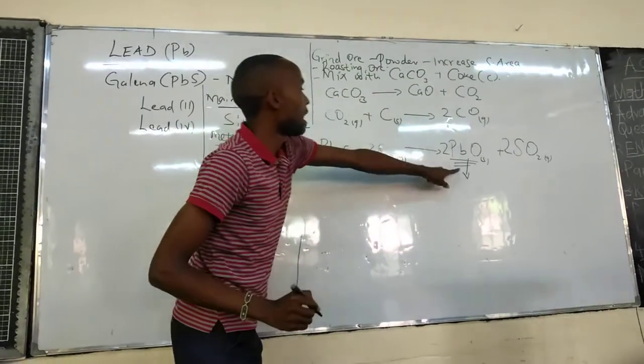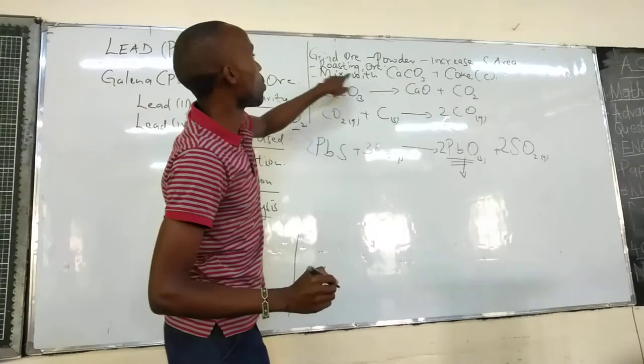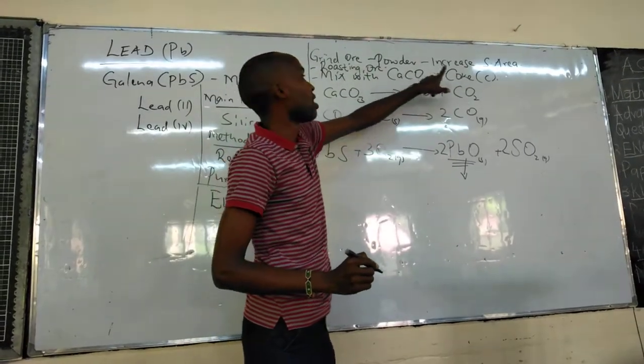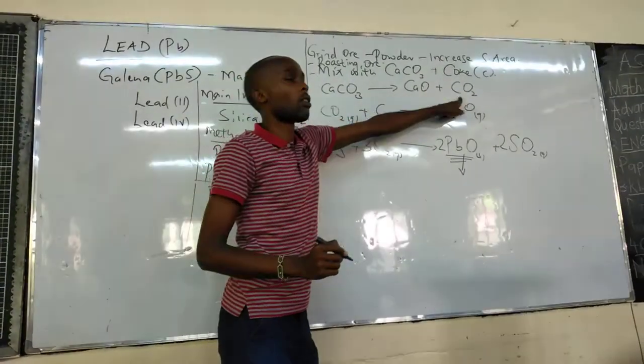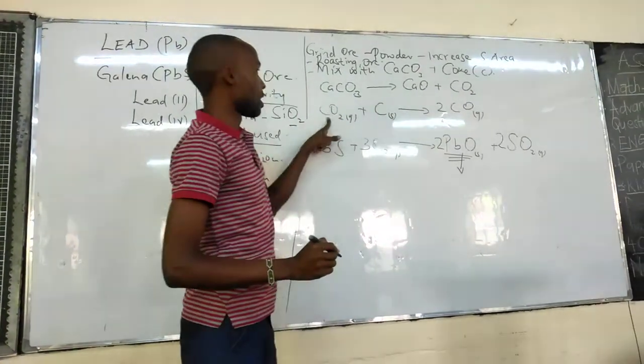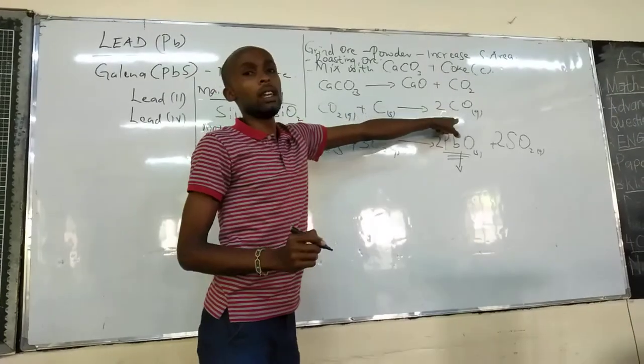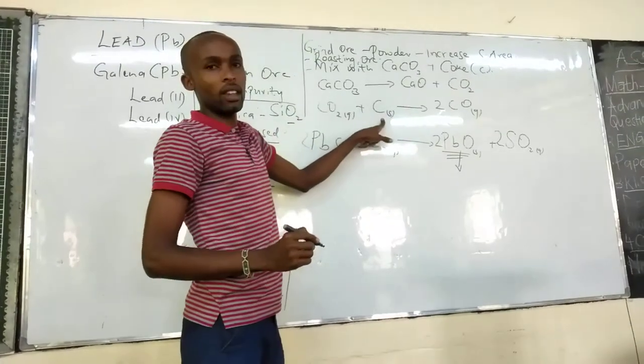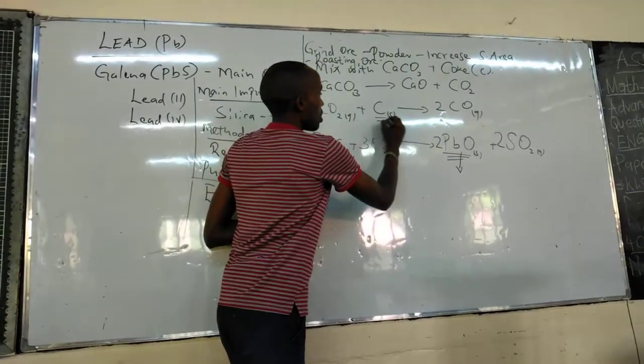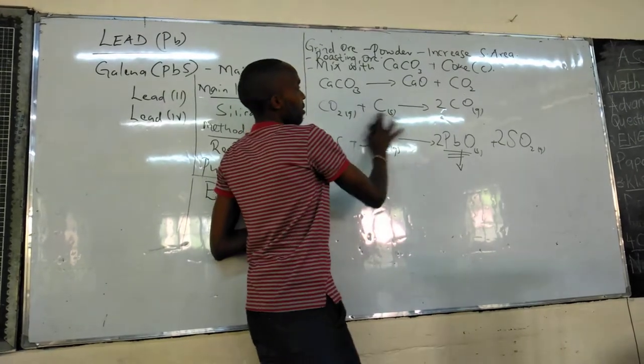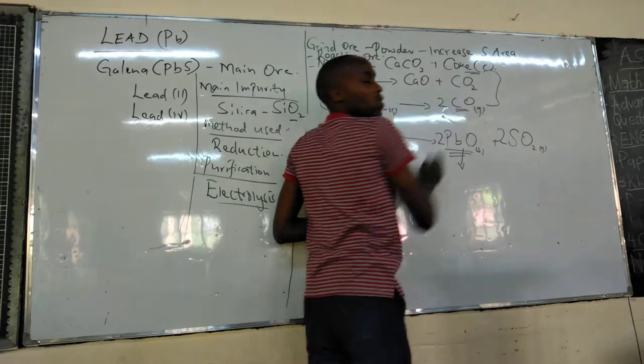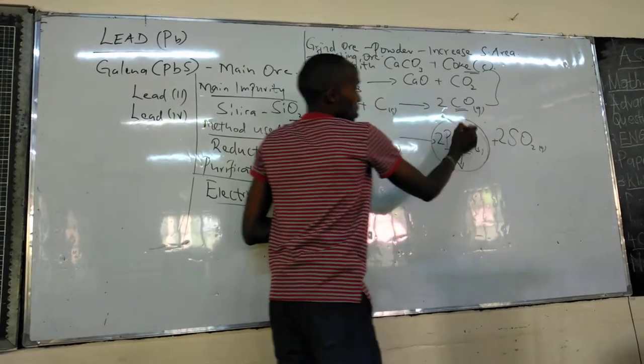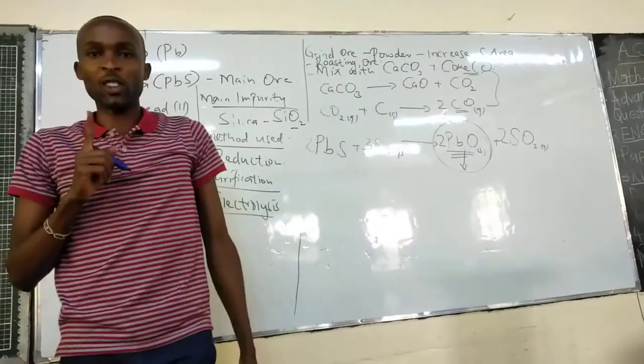Lead oxide now is what you mix with calcium carbonate and coke. So, that calcium carbonate gives us carbon dioxide, which is reduced to carbon(II) oxide by coke. And then, these two, coke and carbon(II) oxide, are now our reducing agents, which we are going to use to reduce lead(II) oxide.